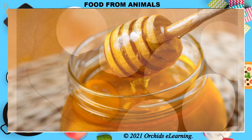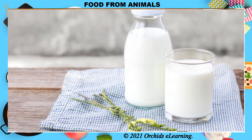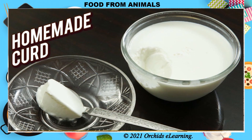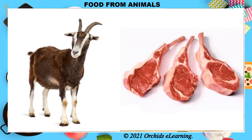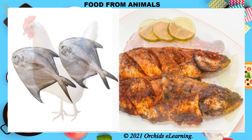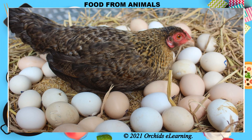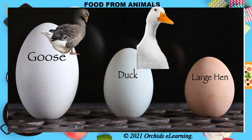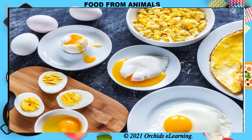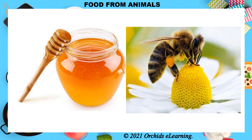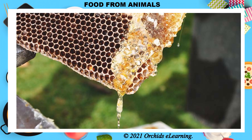Egg, honey, milk, cheese, butter, and curd are eaten by human beings. People commonly eat the meat of animals such as goat, chicken, fish, and prawns. Hen's egg is the most common bird egg that we eat, but many people also eat the eggs of goose and ducks. Egg is rich in proteins and vitamins. Honey is a sweet liquid made by bees from the nectar of flowers and is collected from beehives.